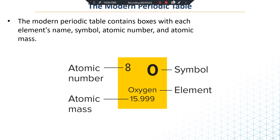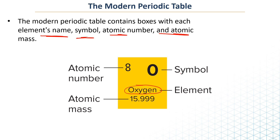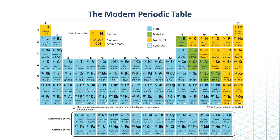This is the atomic number and this is the atomic mass, which we will study in Term 2, inshallah. So this is the modern periodic table that we know. There are groups: Group 1, 2, 3, 4, 5, 6, 7, 8, 9... up to 18.